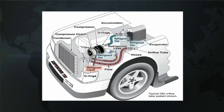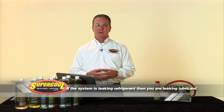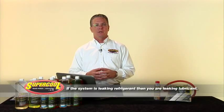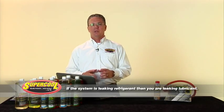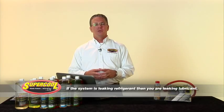As you look at this diagram, the hoses in blue indicate the low pressure side of the system, the hoses in red indicate the high pressure side. The arrows indicate the direction of flow. It's also important to note that the refrigerant and the lubricant in an automotive air conditioning system are miscible — in other words, they mix together and flow through the system together. If you're leaking refrigerant, you're leaking lubricant. The primary function of the lubricant is to lubricate the compressor, so if you're losing lubricant, you're risking damaging that compressor.